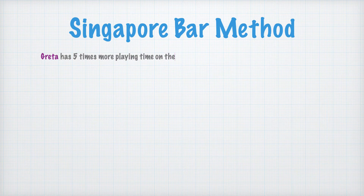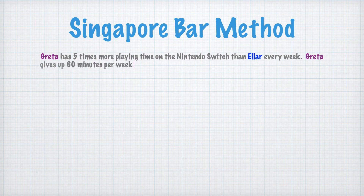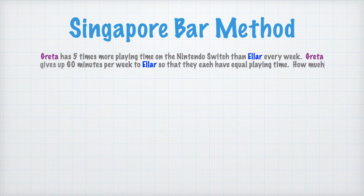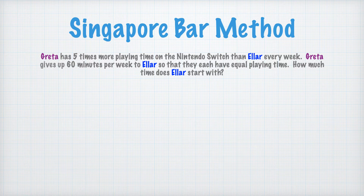So Greta has five times more playing time on the Nintendo Switch than Eller every week. Greta gives up 60 minutes per week to Eller so that they each have equal playing time. How much time does Eller start with? We're going to focus on a couple of keywords in this word problem: five times more, gives up 60 minutes, and to end with equal playing time.